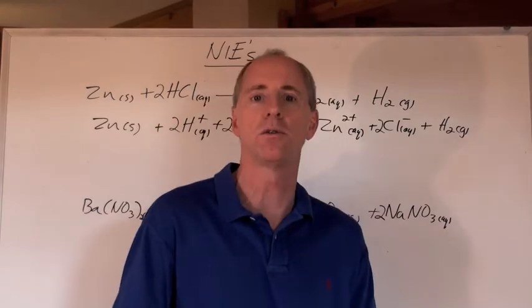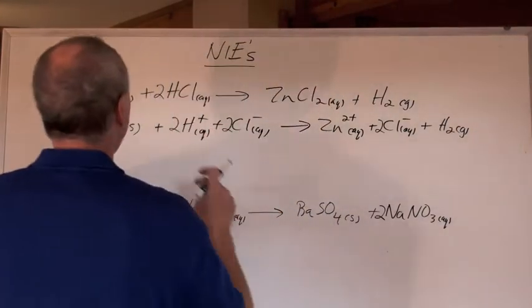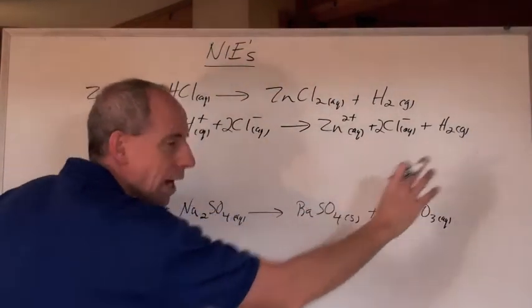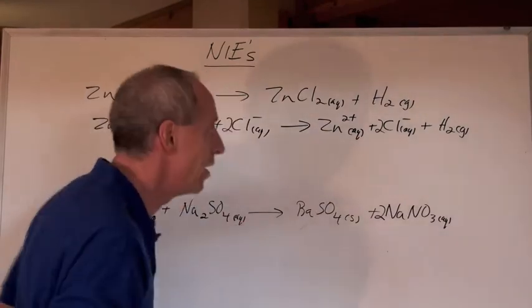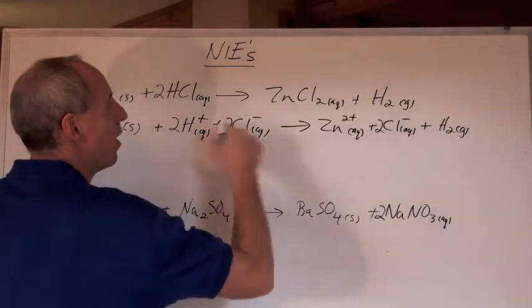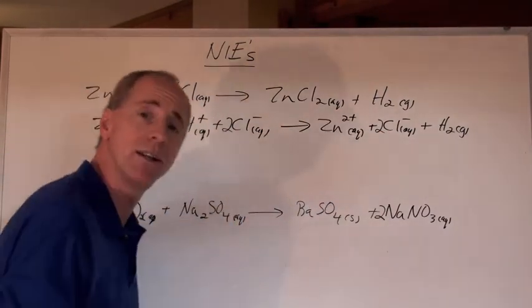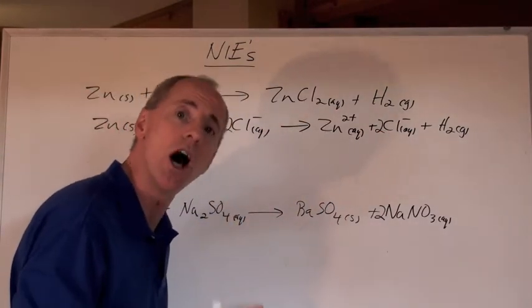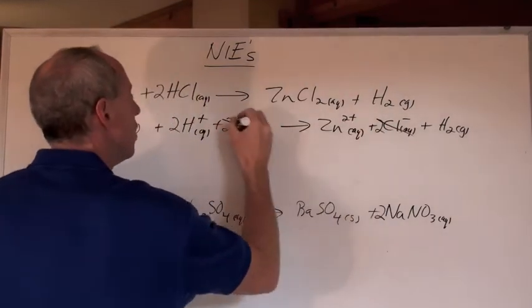So now, look. You've got this total ionic equation, and now you need a net ionic equation. By looking and seeing, the chlorides are just spectators. They watched this reaction take place, and they really did. Chloride ions did not get involved in this reaction. So they are gone.